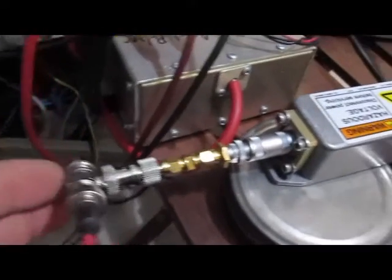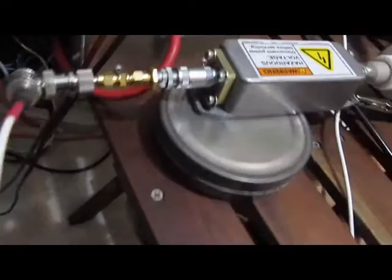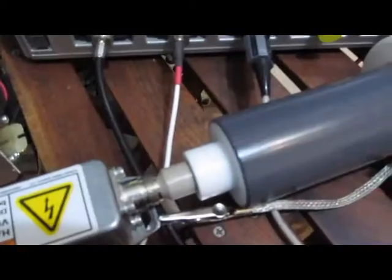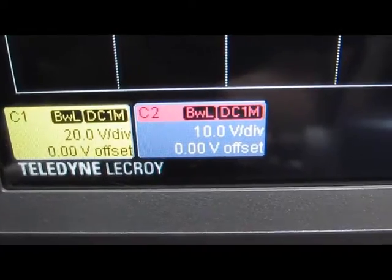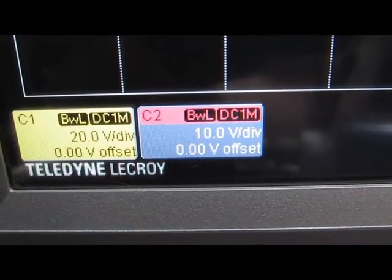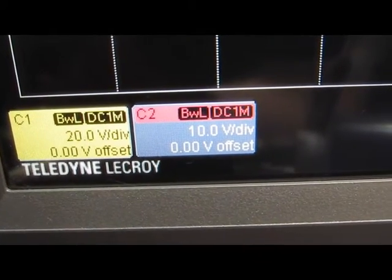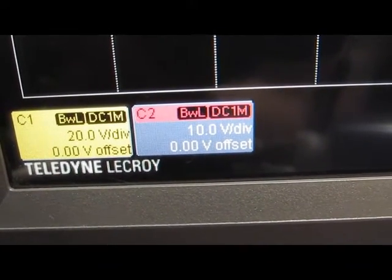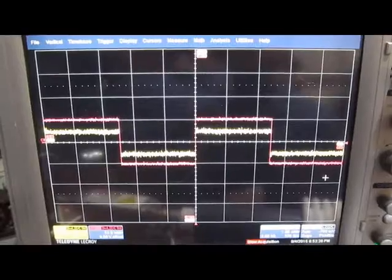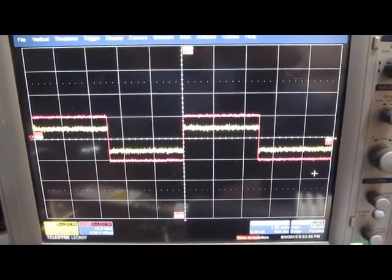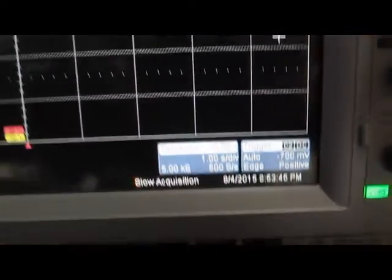I've got our output of our ARB connected to a T. One side of the T is just going to the input of our scope and the other side is going to our 10,000x probe. You can see the red trace is set at 10 volts per division and the yellow trace, our 10,000x probe, set to 20 volts per division. The ARB is currently set for a period of five seconds. You can see it's currently set for one second per division.